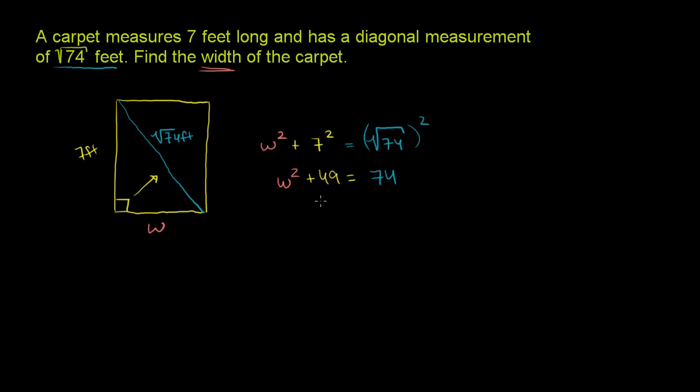We can subtract 49 from both sides of this equation. Subtract 49 from both sides. The left side, these are going to cancel out, we're just going to be left with W squared.